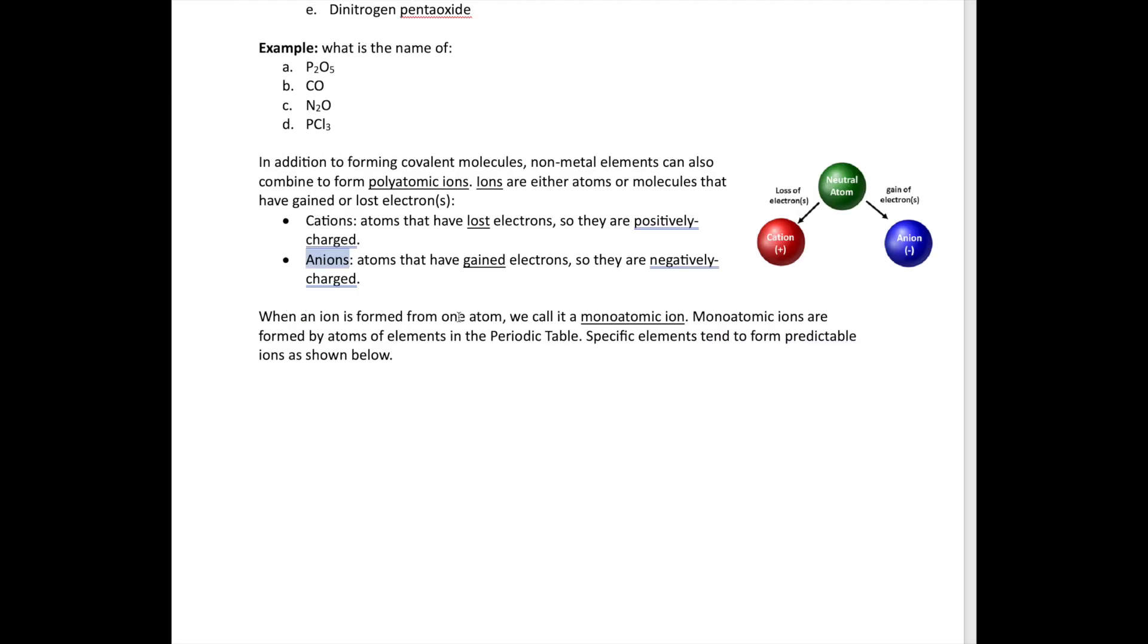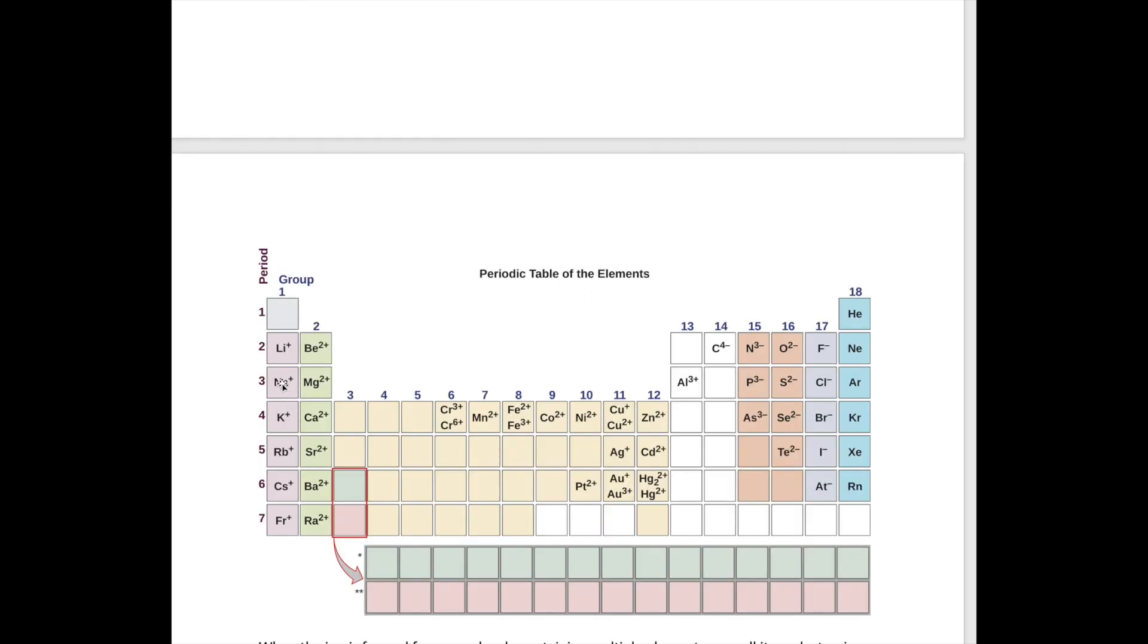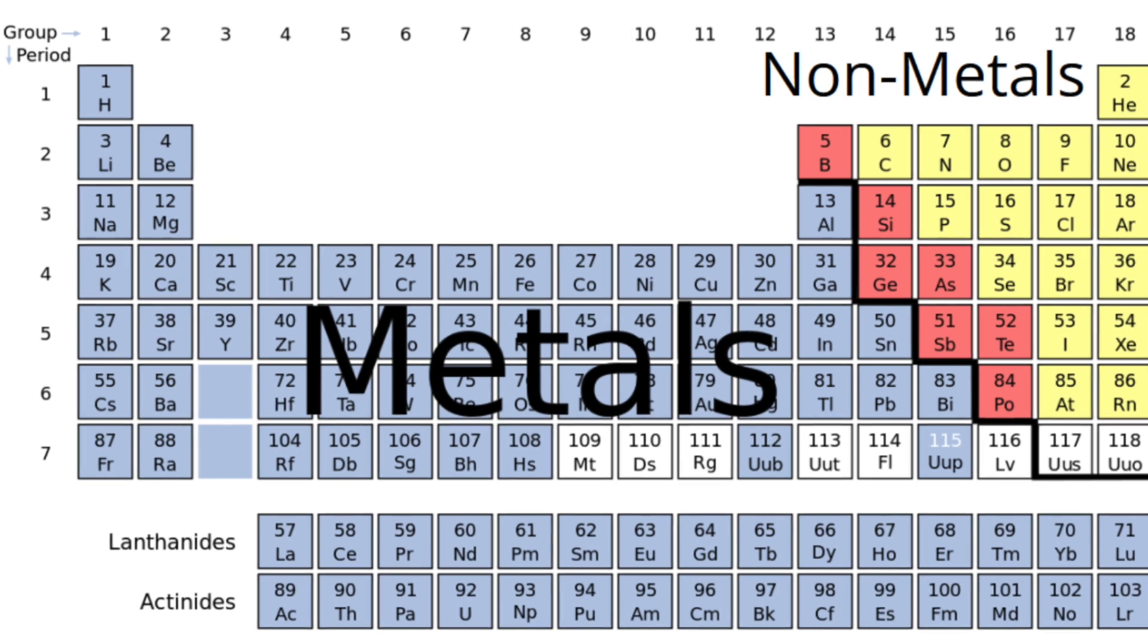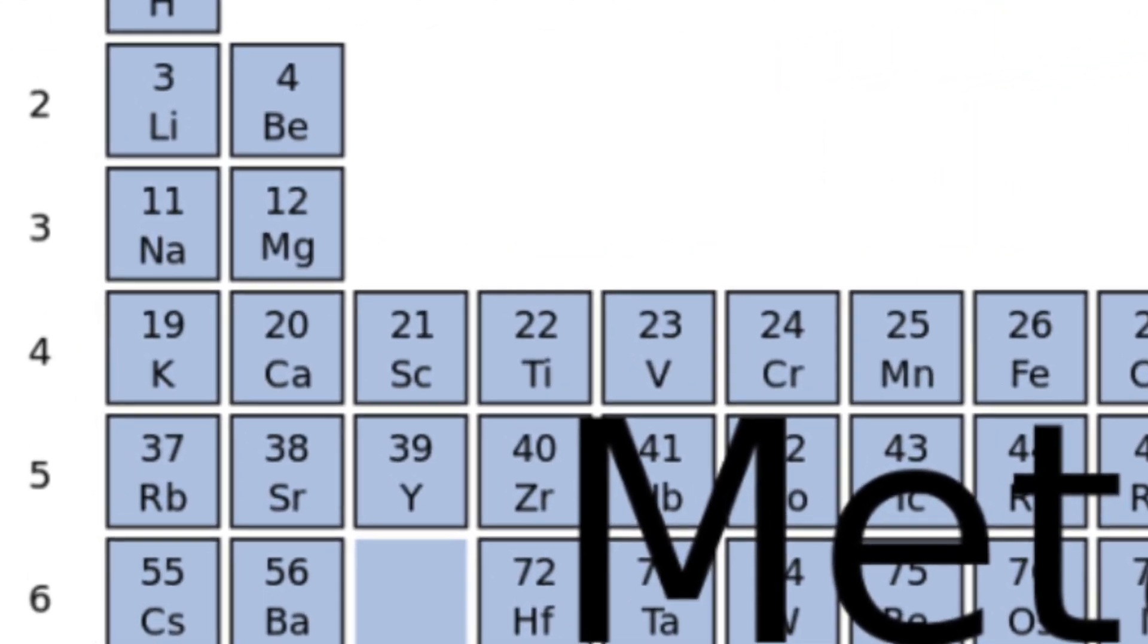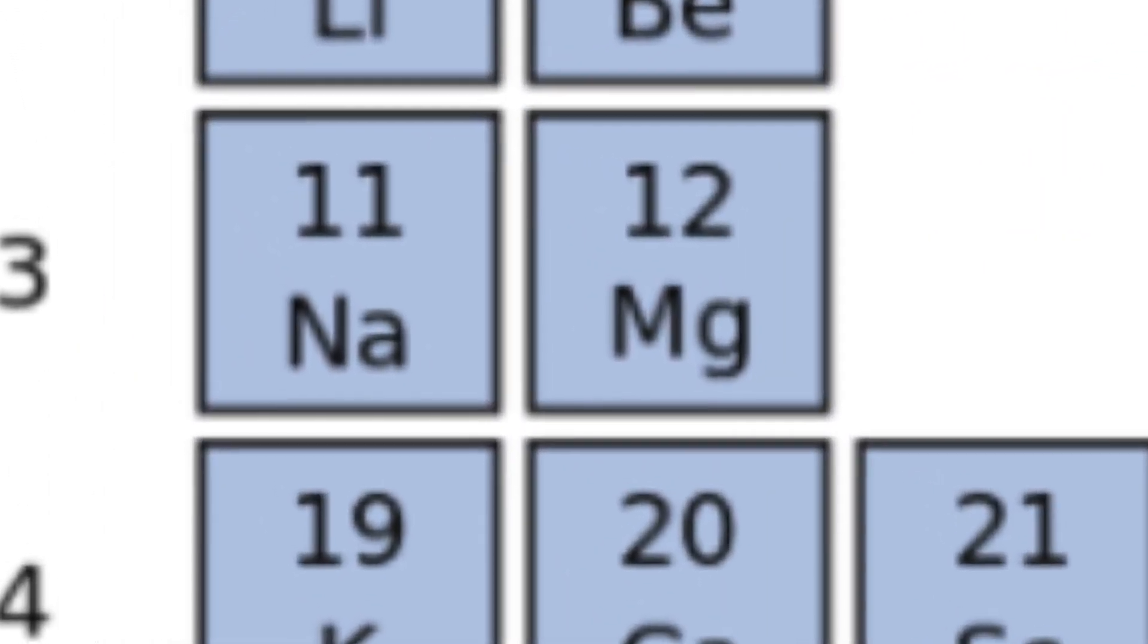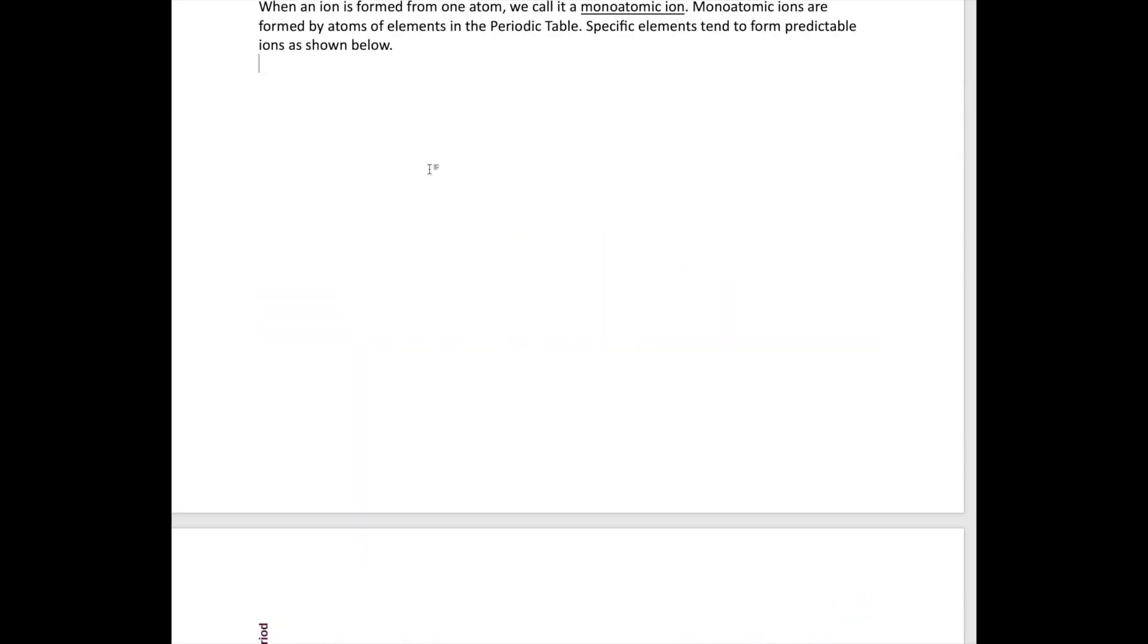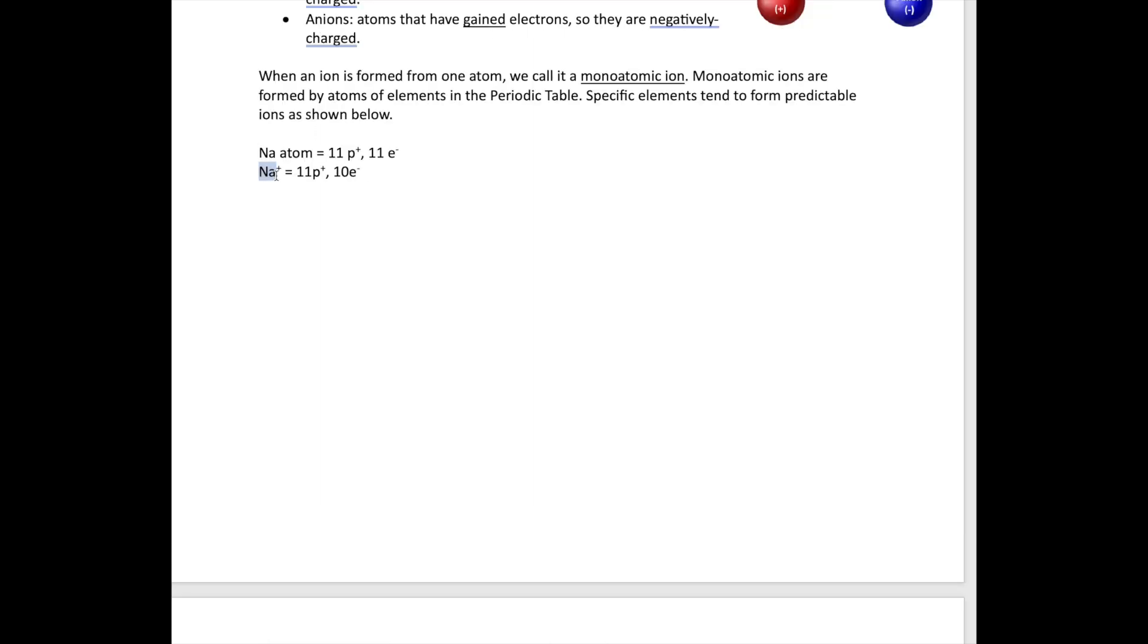Now, when the ion is formed from just one atom, we will call it a monoatomic ion. So let's take a look at sodium. Sodium originally is just the atom. If you look at the number of protons in the atom state, it has 11 protons and 11 electrons. So if it loses that one electron, normal sodium atom is 11 protons, 11 electrons. And then sodium ion has 11 protons, but only 10 electrons because it's lost that one electron. This is what we call a monoatomic ion because it only has one element in it. Mono, remember, means one.